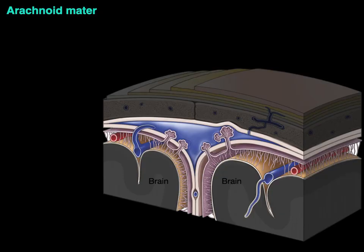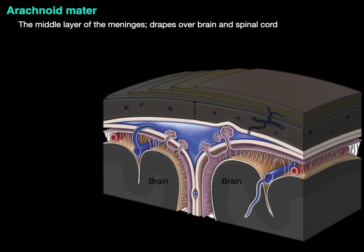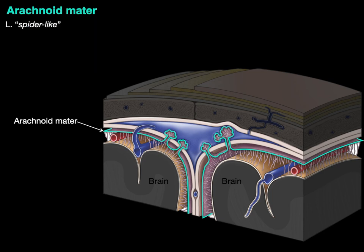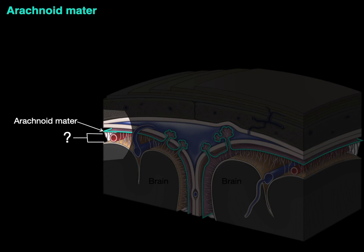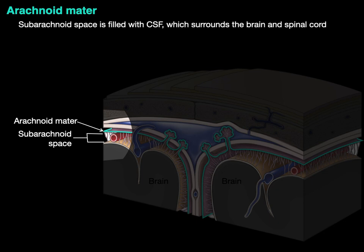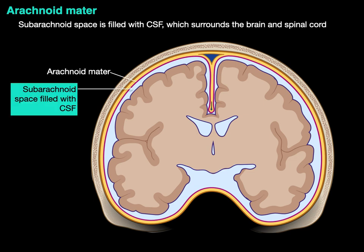Now let's go to the arachnoid mater. The arachnoid mater is the middle layer of the meninges and it drapes over the brain and the spinal cord. Arachna means spider-like — like arachnophobia — and mater means mother. The connective tissue that connects the arachnoid to the pia mater kind of looks like a spiderweb. The space below the arachnoid mater is called the subarachnoid space — sub means below. The subarachnoid space is filled with cerebrospinal fluid which surrounds the brain and spinal cord, and there's also CSF inside the spinal cord as well.